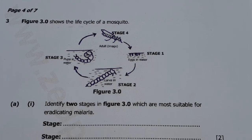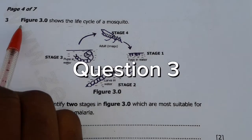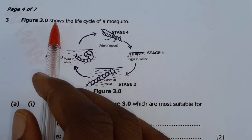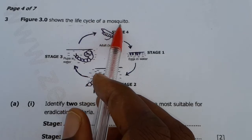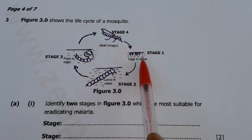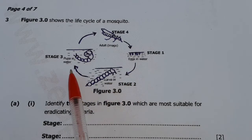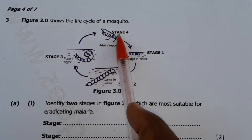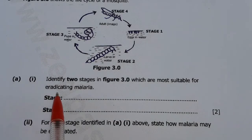In this video, we are going to look at Biology 2017, Paper 2, Question 3. The information says Figure 3.0 shows the life cycle of a mosquito. So you have the first stage: eggs in water, larva in water, pupa in water, and an adult stage.